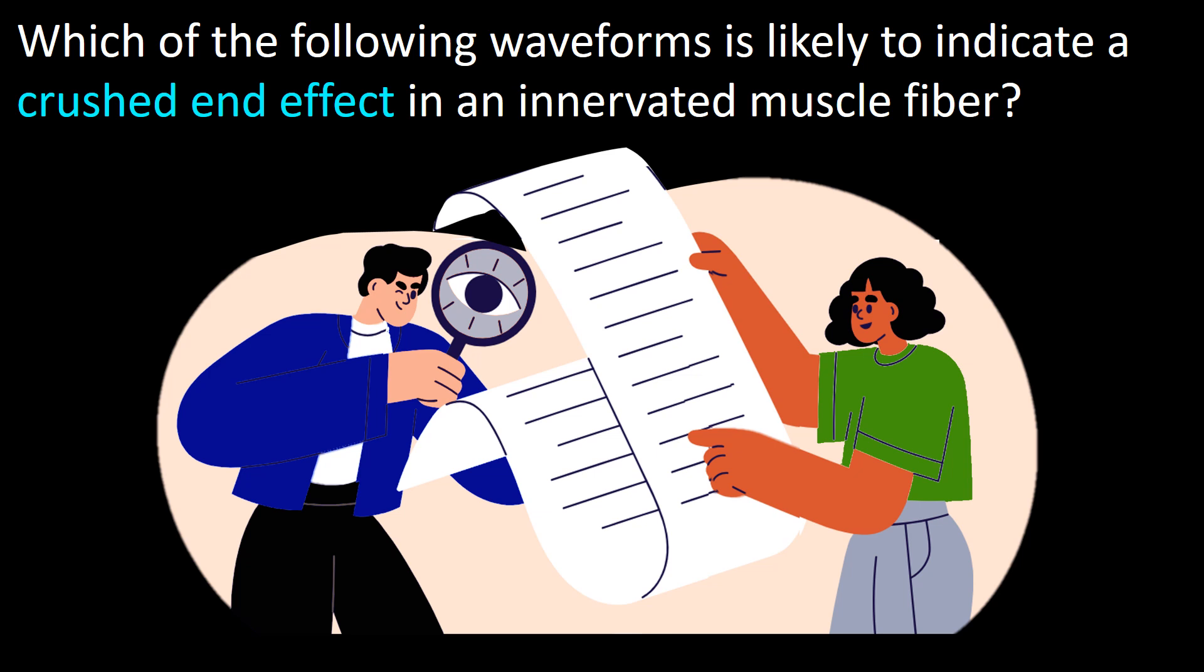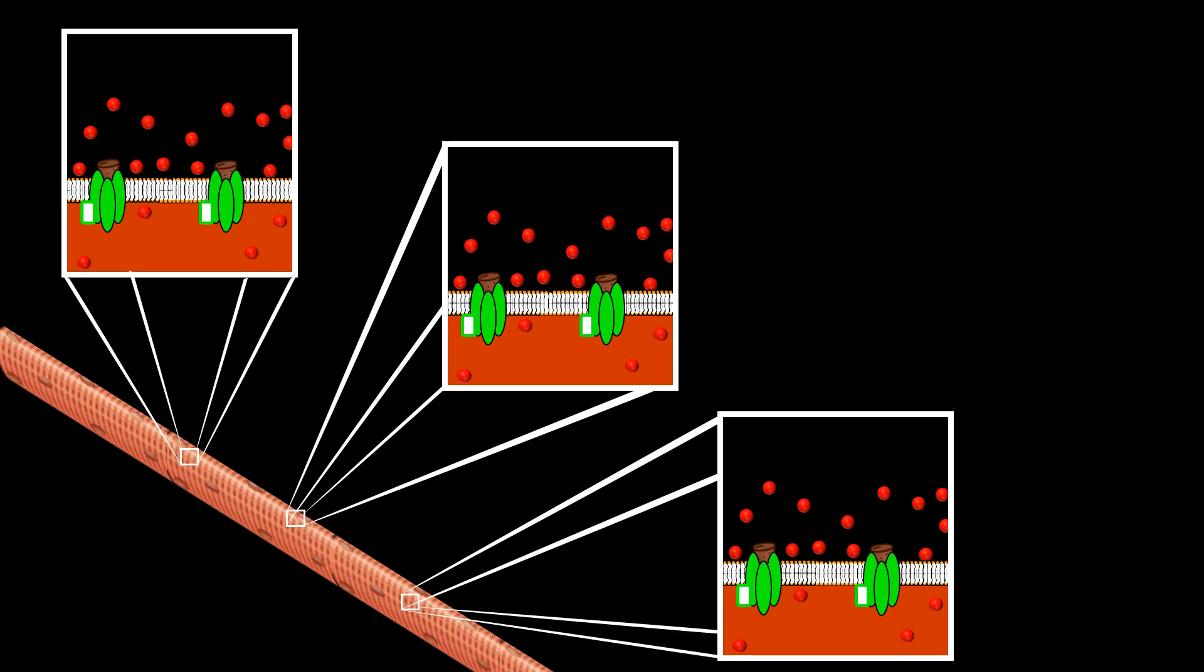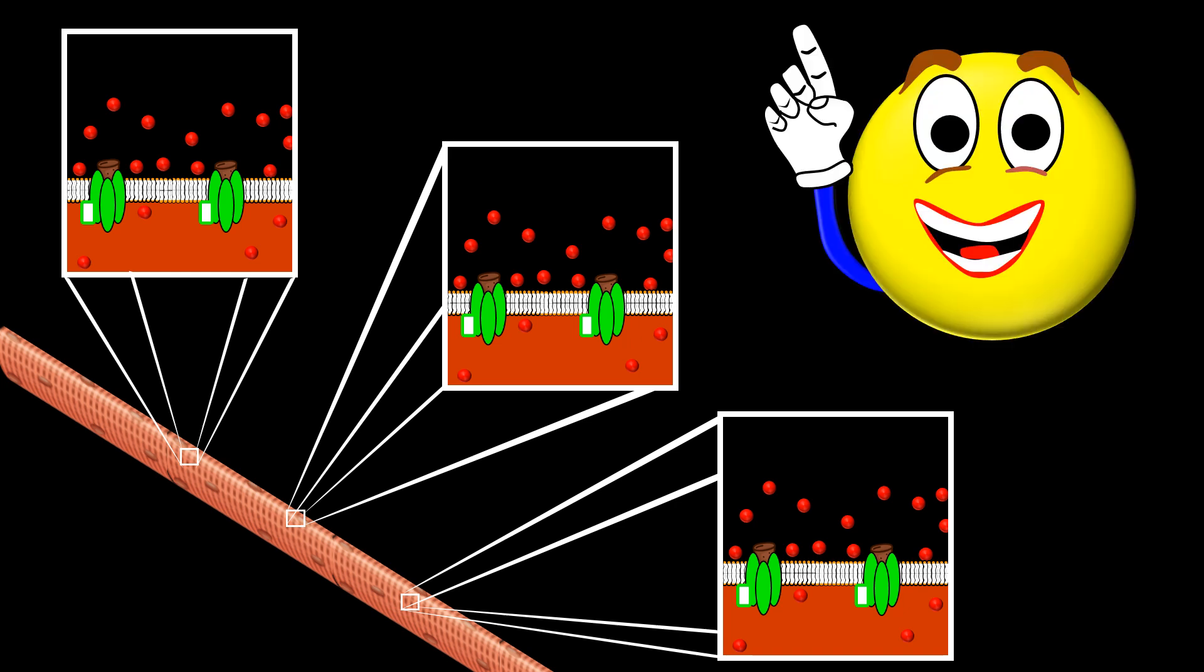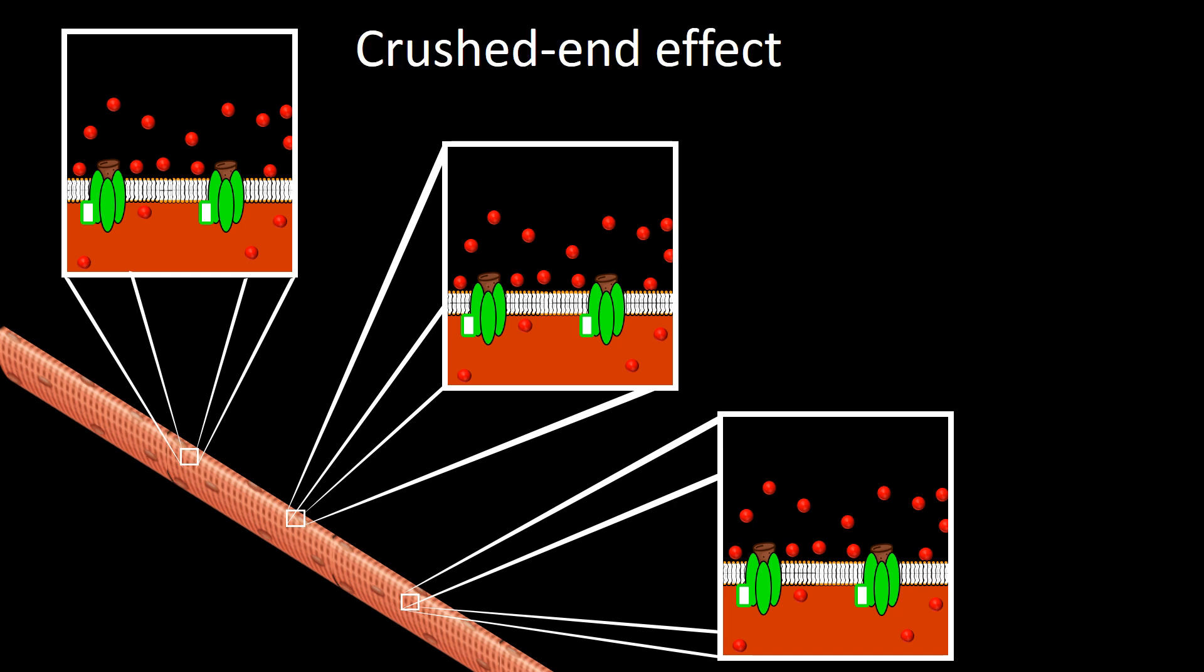First, let us understand what a crush-end effect means. At rest, the membrane of a muscle fiber can simplistically be described as a porous phospholipid bilayer splashed with closed voltage gated sodium and potassium channels. In this figure, I have only represented sodium channels because they suffice for this explanation.